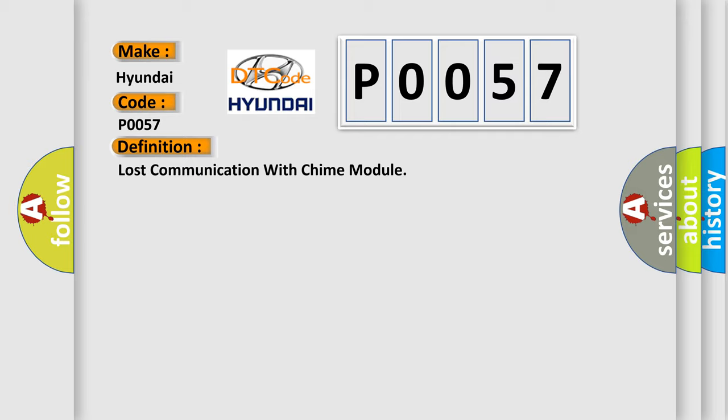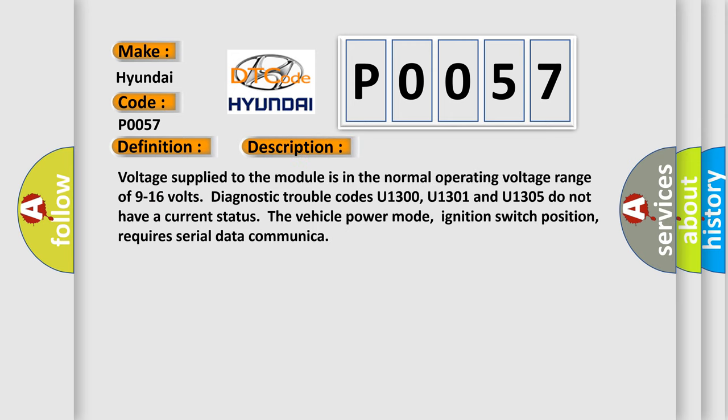And now this is a short description of this DTC code. Voltage supply to the module is in the normal operating voltage range of 9 to 16 volts. Diagnostic trouble codes U1300, U1301, and U1305 do not have a current status. The vehicle power mode, ignition switch position, requires serial data communication.